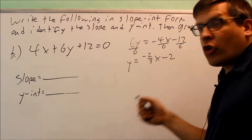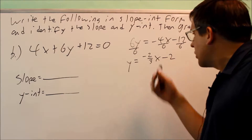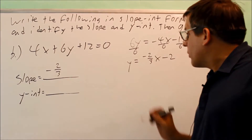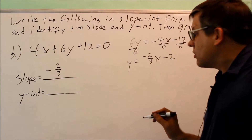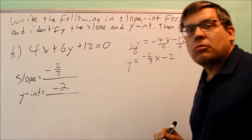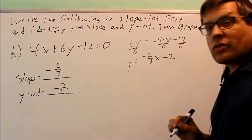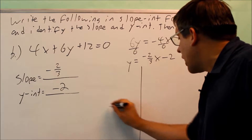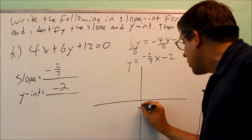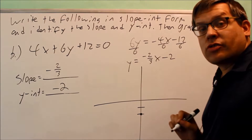Now that it's in proper form, we can identify the slope and the y-intercept. The slope is negative 2 thirds — the number in front of the x. The y-intercept is negative 2 — the number after the x term. Now we're ready to start the graph. As always, we begin with the y-intercept: go down 2 and make a dot right there.